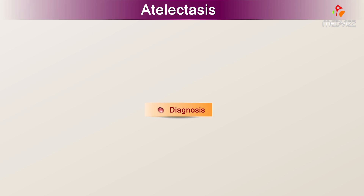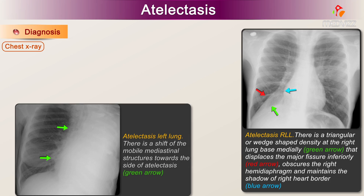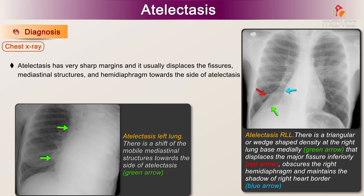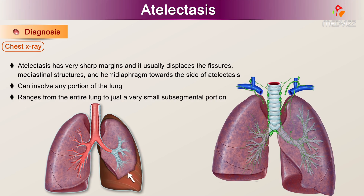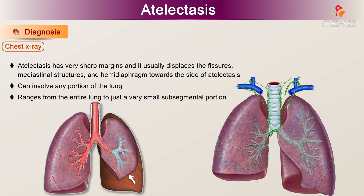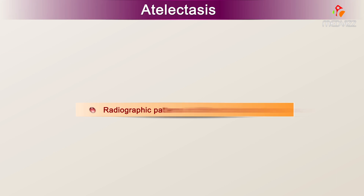Diagnosis — Chest X-ray: Atelectasis has very sharp margins and it usually displaces the fissures, mediastinal structures, and hemidiaphragm towards the site of atelectasis. Atelectasis can involve any portion of the lung, ranging from the entire lung to just a very small subsegmental portion. Radiographic patterns in different lobar atelectasis: